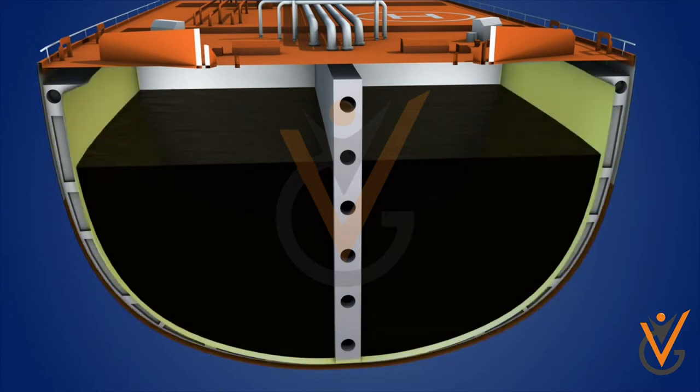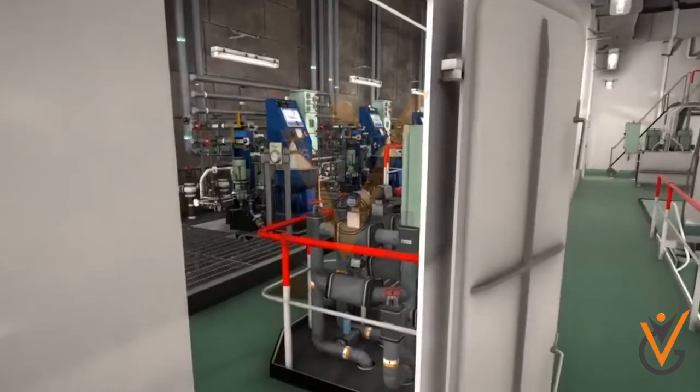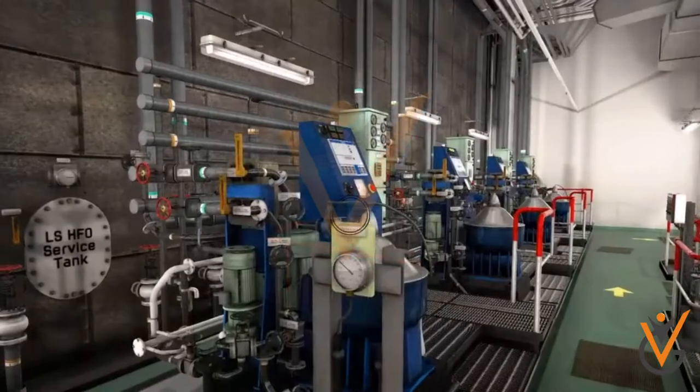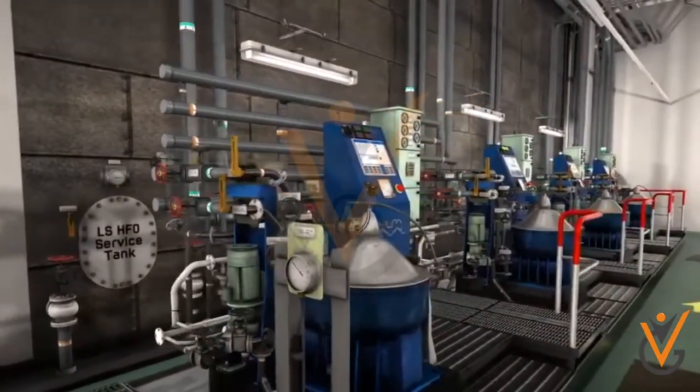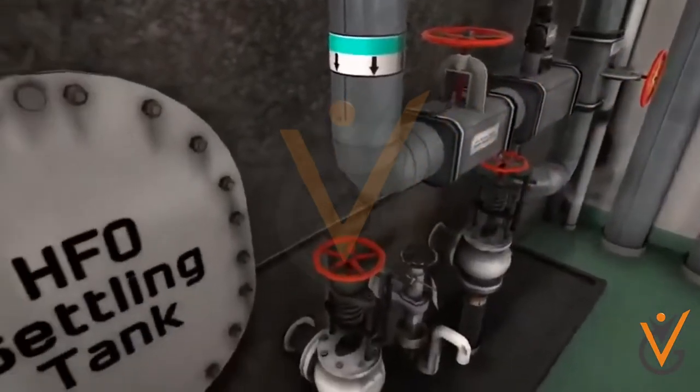On ships, separate marine purifiers are used for fuel and lube oil. Lube oil is purified only through centrifugation, while the fuel oil uses both centrifugation and gravity separation.